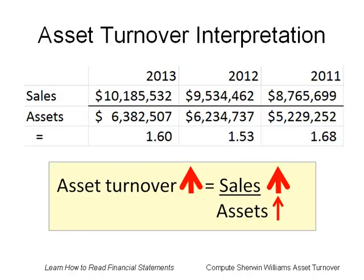Now we need to compare the figures to figure out what caused the fraction to go up from 1.53 in 2012 to 1.6 in 2013. The overall fraction will go up if the top part of the fraction goes up faster than the bottom part. We can see that sales did go up by about $600,000,000 from 2012 to 2013, while assets went up by only $140,000,000 from 2012 to 2013.